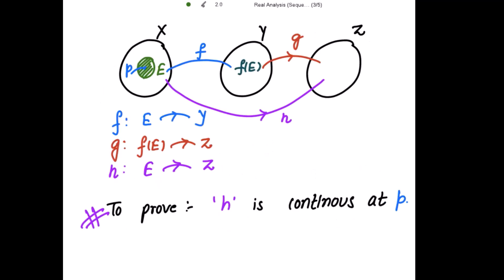Diagrammatically, these mappings are represented over here. This x, y, z are your metric spaces and this green colored E is a subset of x and a point p is belonging to this E.